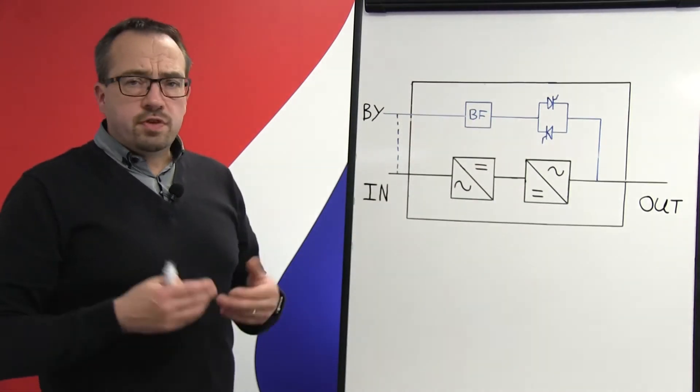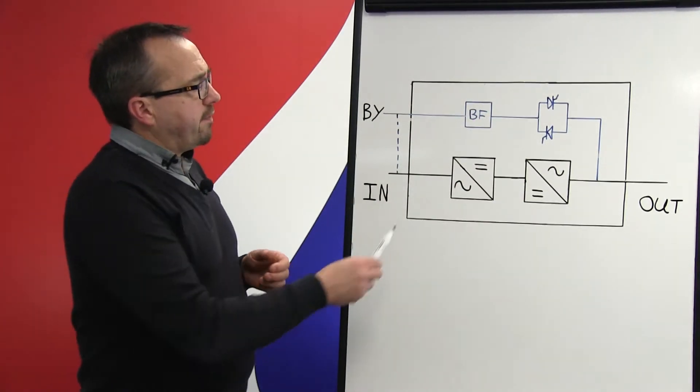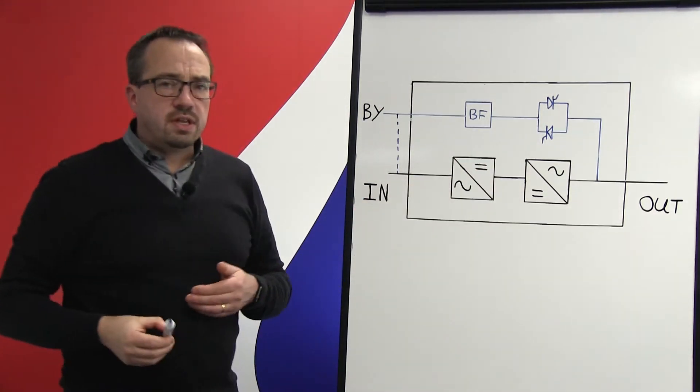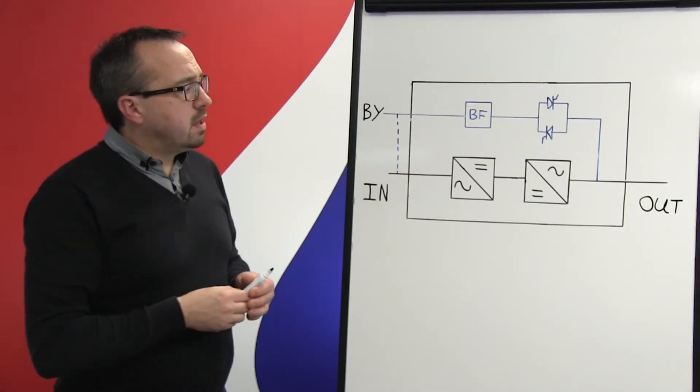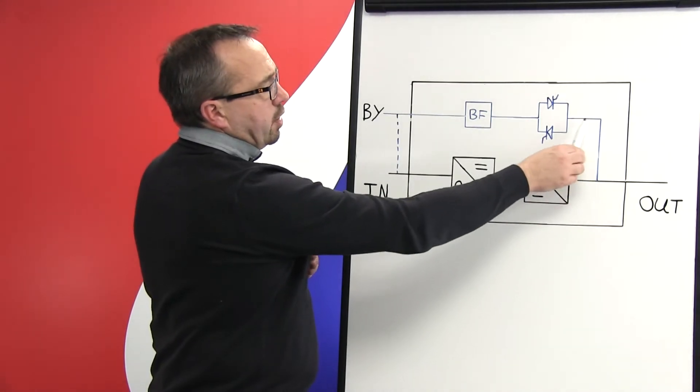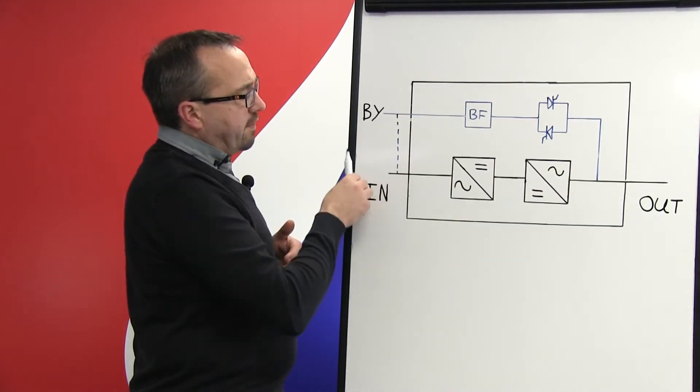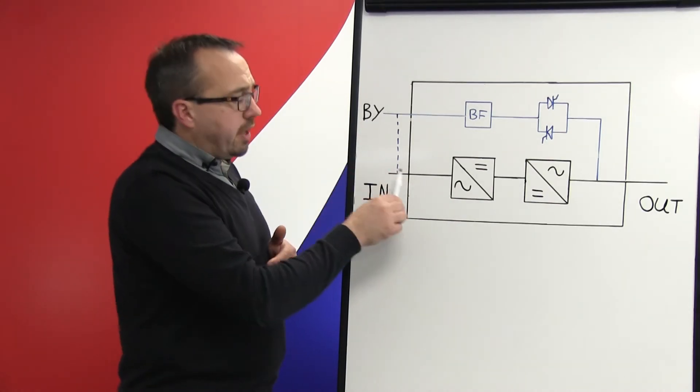Now the bypass itself is made up of two primary components: you have the back feed protection and you have the main static switch. The back feed protection is basically there to prevent the UPS system from back feeding power through the bypass line when there's no main supply.